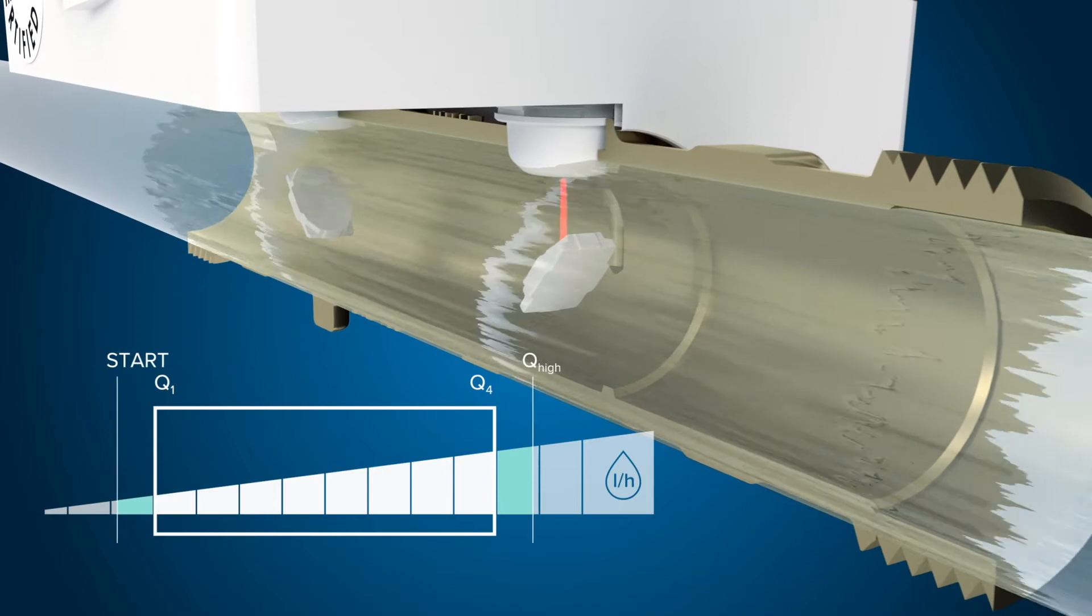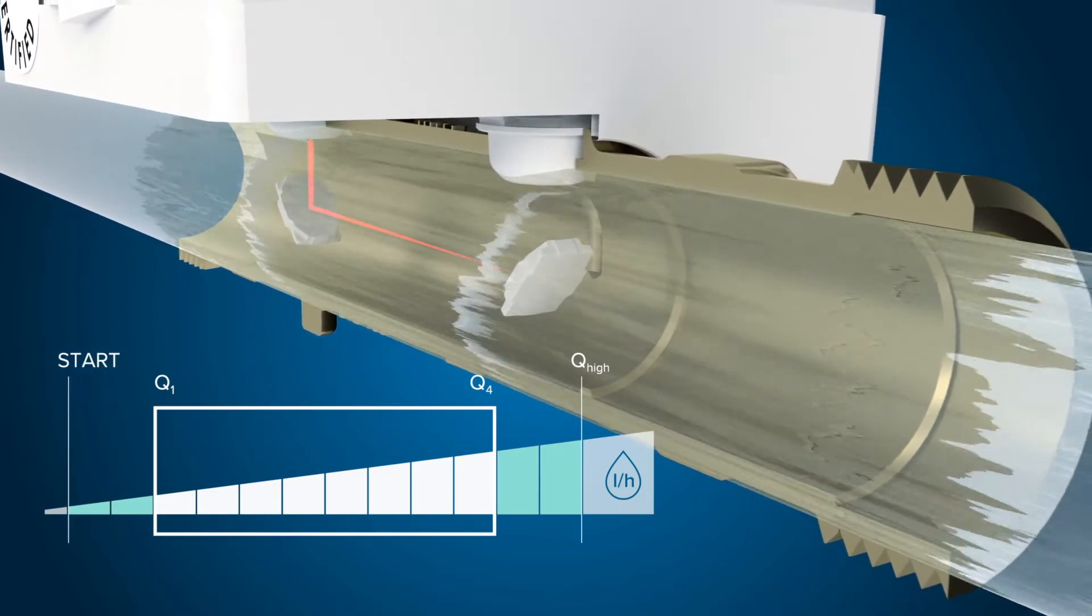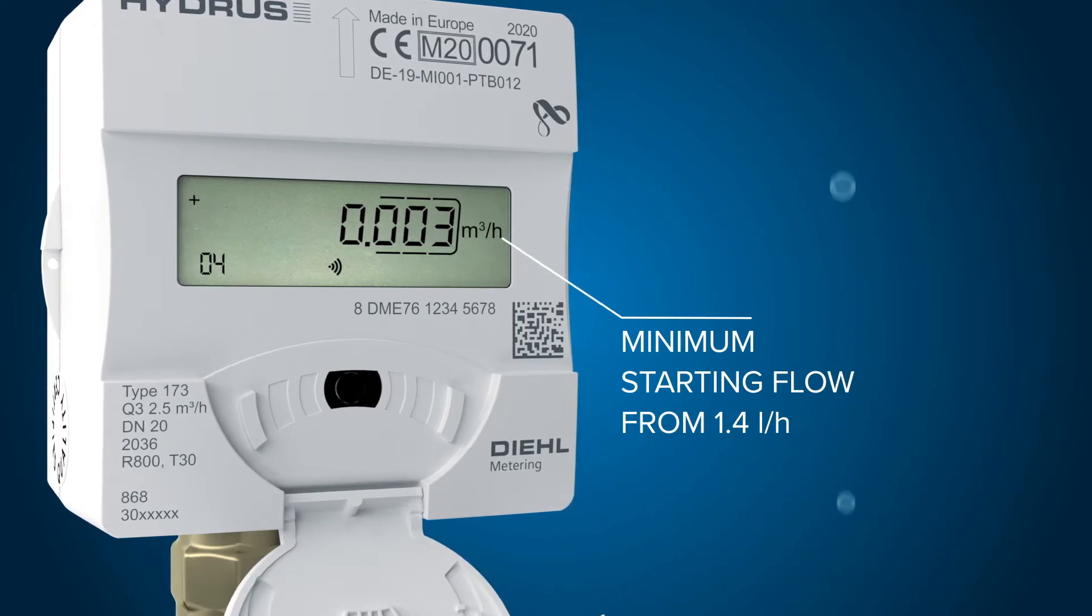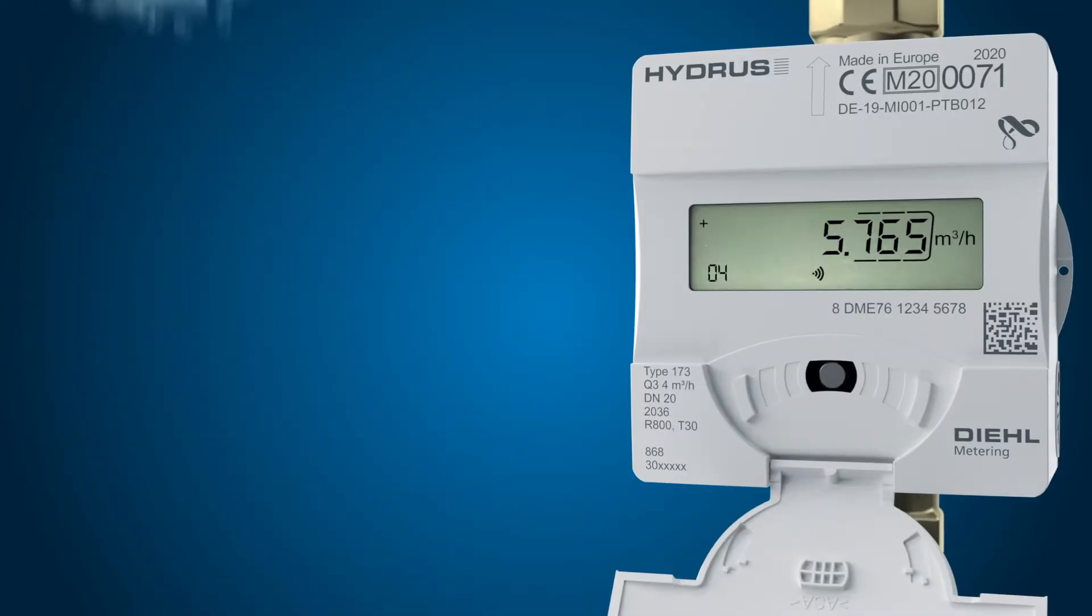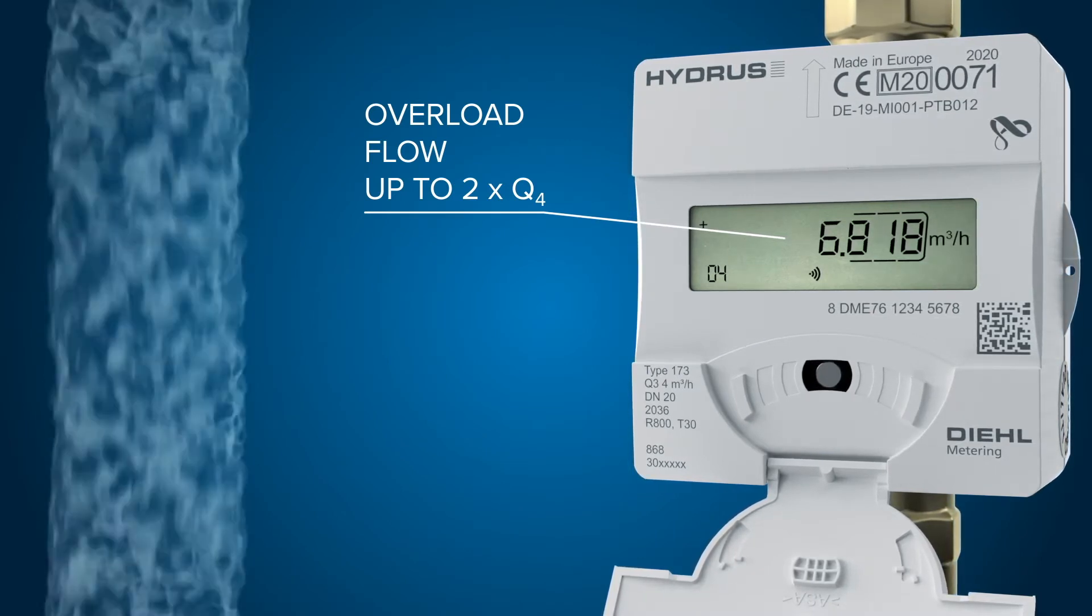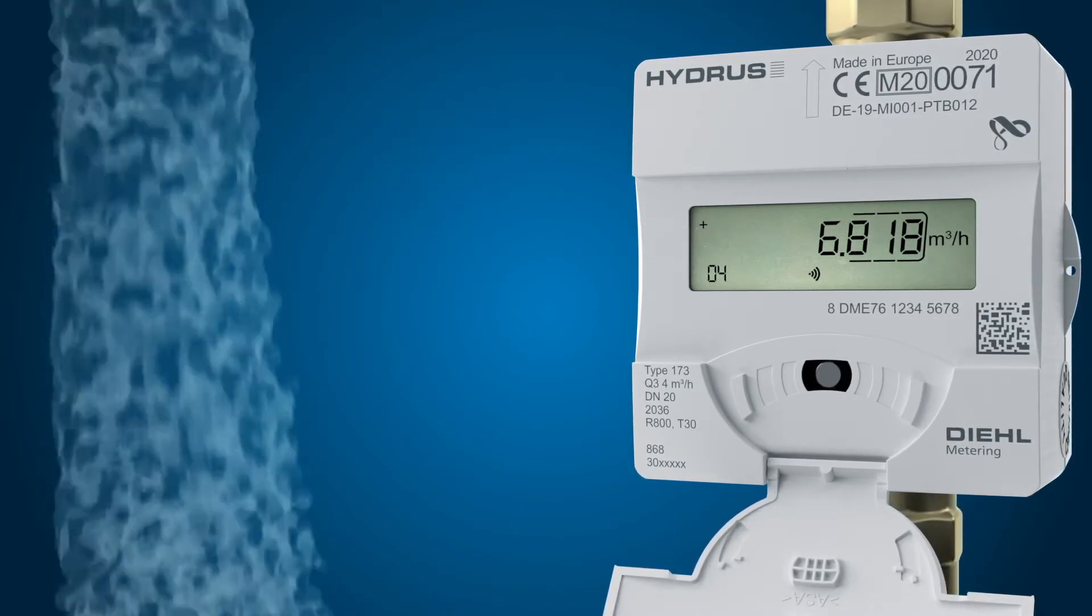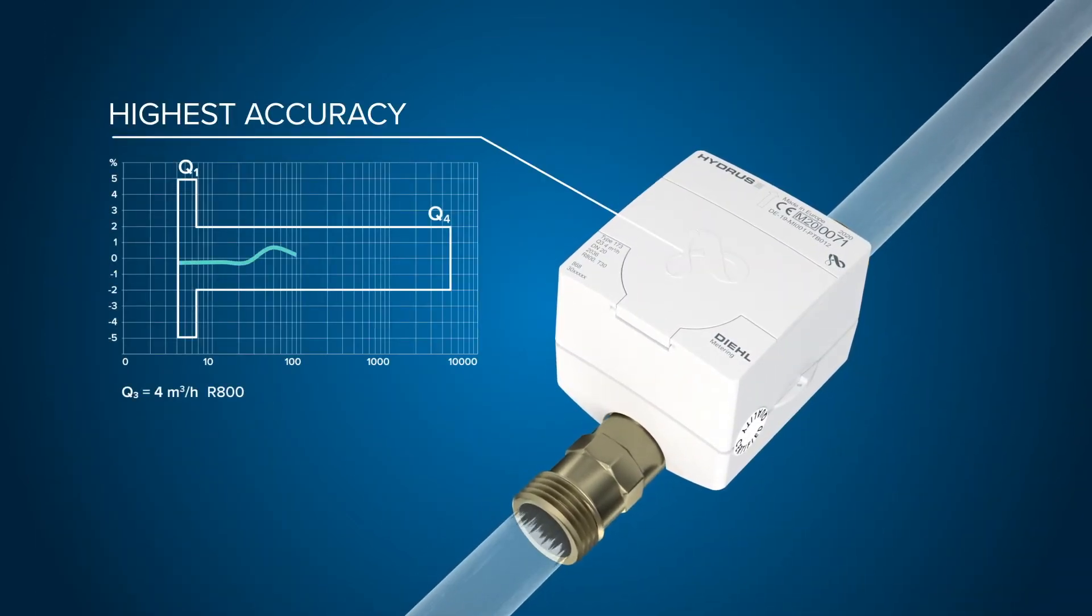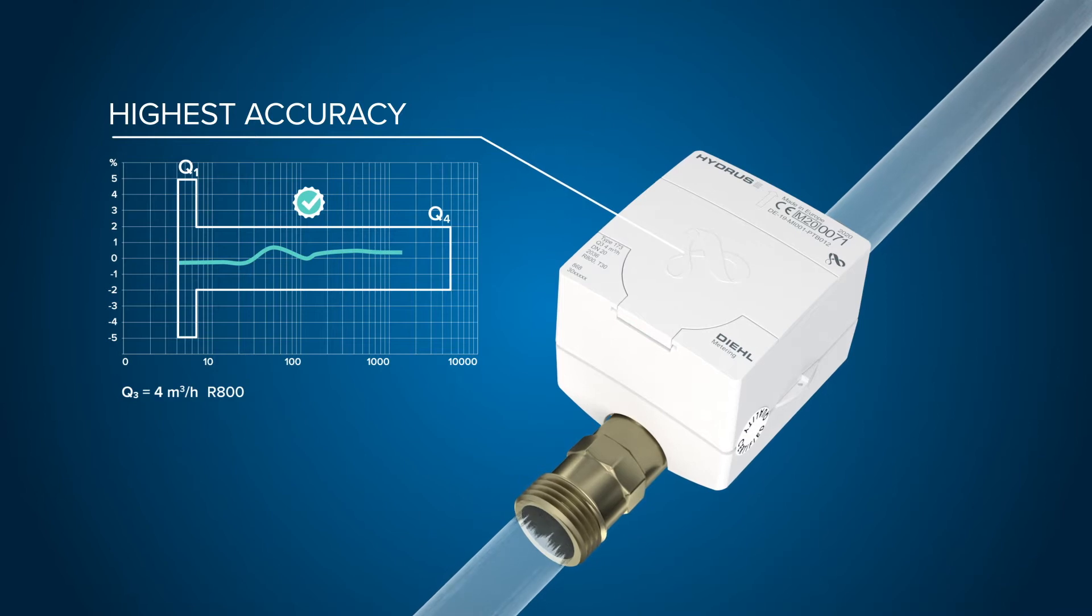Flow registration with better starting and overload flow is boosted as well. Regardless if your customers use very small or high water flows, every drop is counted to reduce non-revenue water. You can rely on the highest accuracy for every consumption profile for precise billing.